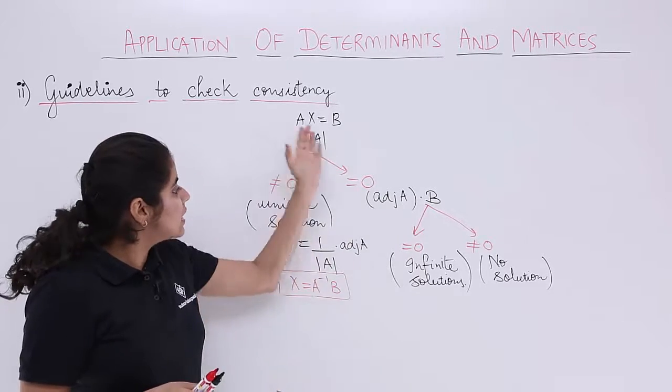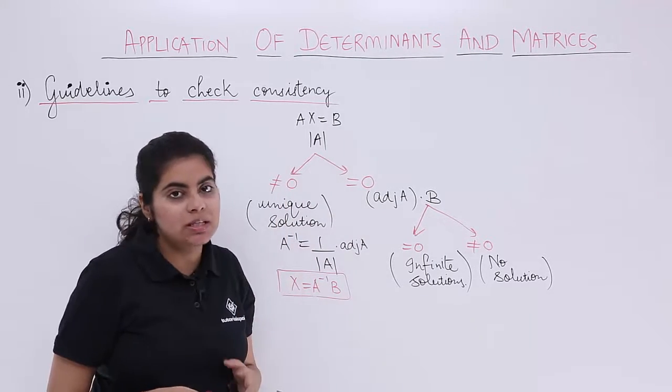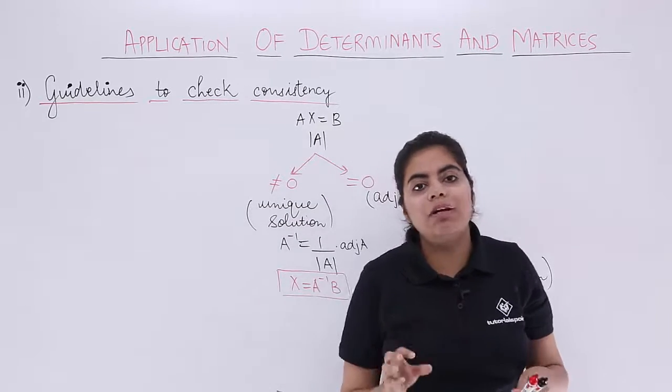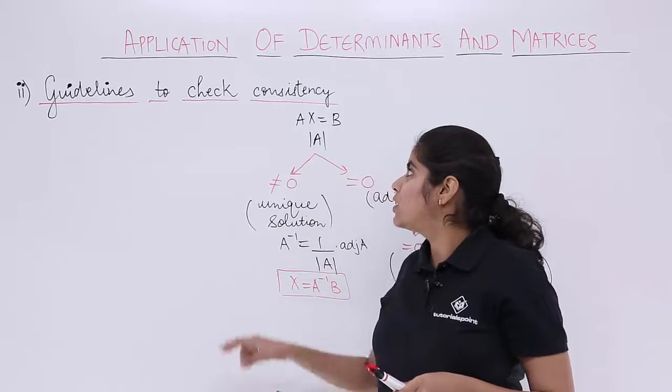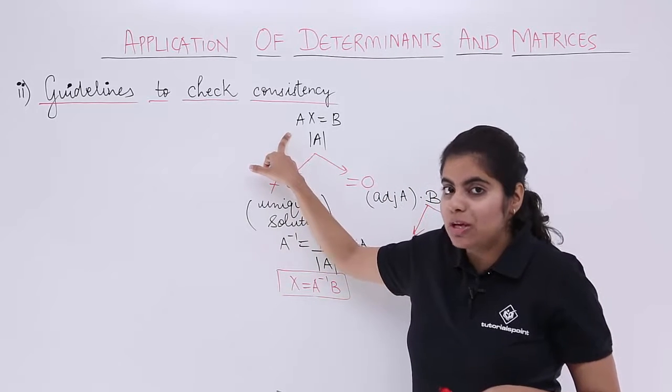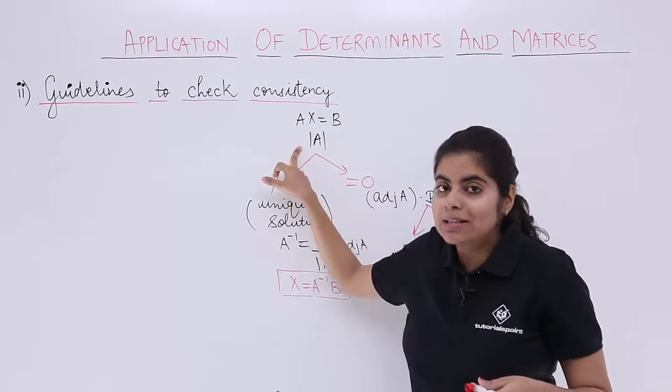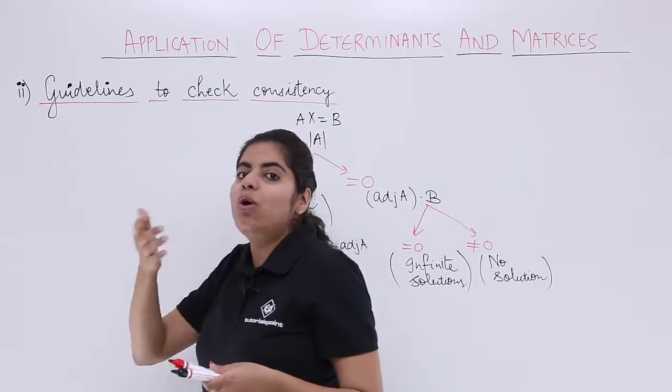You see that the schematic has already been drawn which was in the previous video. Now till the previous video, we know that to solve a given system of equations, you need to first express the system of equations in matrix form and then check the determinant value, whether it is 0 or not.